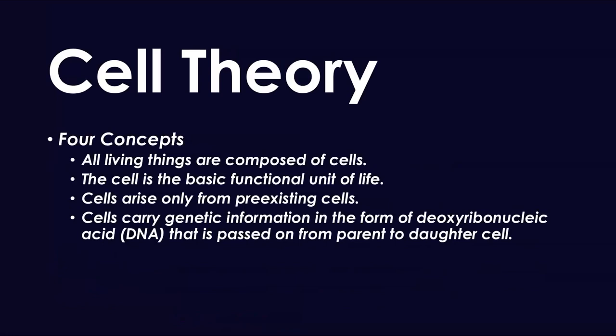Let's talk about the high yield cell theory content. There are four main tenets. First, all living things are composed of cells. Second, the cell is the basic functional unit of life — these two go hand in hand. Third, cells arise only from pre-existing cells. Fourth, cells carry genetic information in the form of DNA — deoxyribonucleic acid — which they pass on from parent to daughter cells.